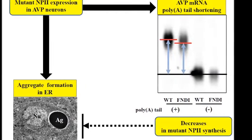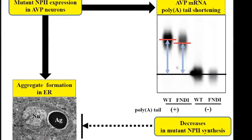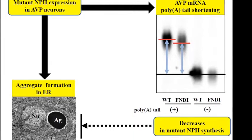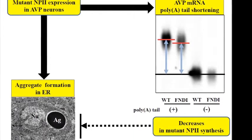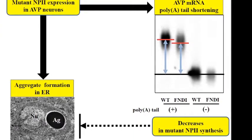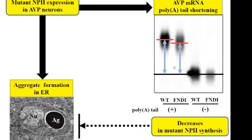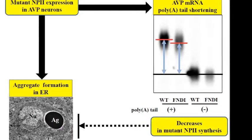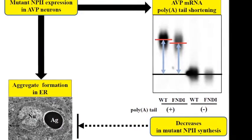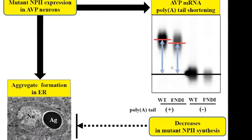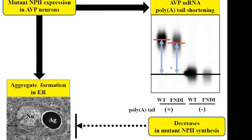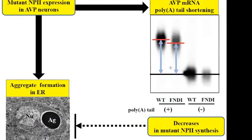They conclude that the shortening of vasopressin poly-A tail length in FNDI mice may result in decreased vasopressin mRNA stability and decreased vasopressin in FNDI mice, or that the decreased vasopressin poly-A tail may be a cellular protective mechanism to diminish accumulated mutant vasopressin.